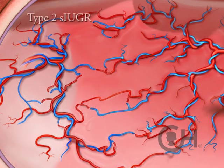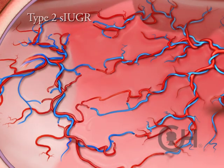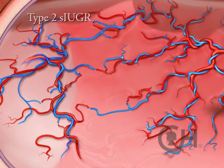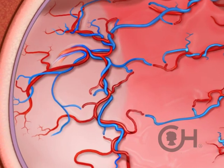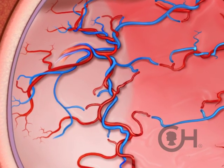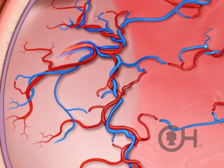In type 2 selective IUGR you start to see a much smaller portion of placenta for the one that develops the intrauterine growth restriction. The number of vessels decreases even more. They tend to be balanced so that the number of artery-to-vein connections from the smaller to the bigger is still offset by artery-to-vein connections in the other direction, but the numbers are much fewer. This more restrictive dynamic sharing forces the fetus with the smaller portion of placenta to survive on what it has as far as placental mass, and the less volume of placenta it has the more it struggles.